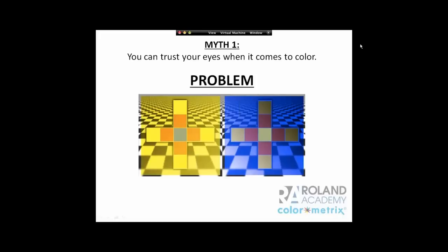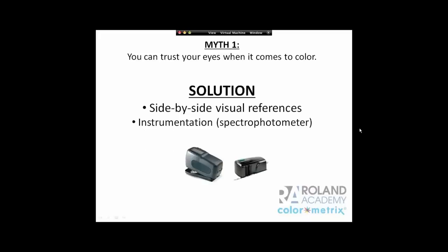Myth one: You can trust your eyes when it comes to color. This square, which appears to be a light purplish blue, and this square here appears yellow — but both are actually neutral grays. Your eye is being deceived by the patterns in the background, the yellow overlay, the blue overlay, and the surround colors. So yes and no — if you have a side-by-side visual reference, you can use your eyes. However, in the print industry, we like to rely on instrumentation or spectrophotometers.